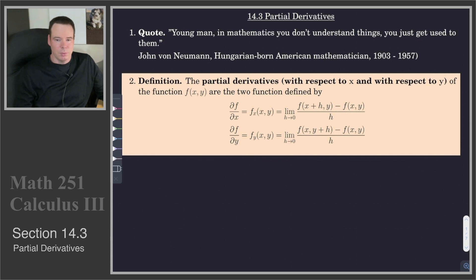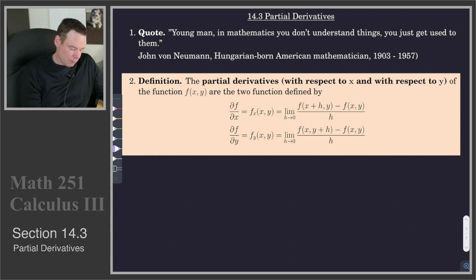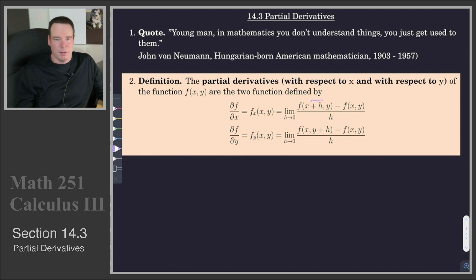The definition is given below. The partial derivative with respect to x or with respect to y of a multivariable function f of xy is given by these limits of the difference quotients. The partial derivative of f with respect to x is obtained by doing a little increment of f in the x direction — f of x plus h and y minus f of x and y — divided by h, giving us our limit of a difference quotient.